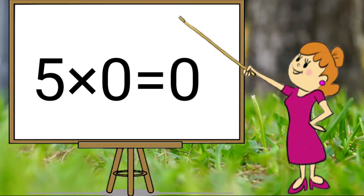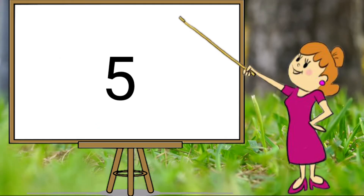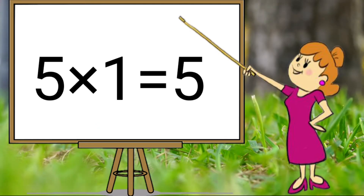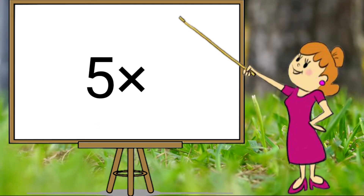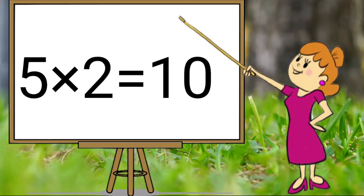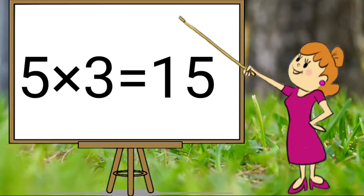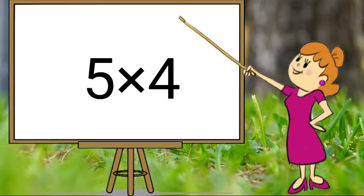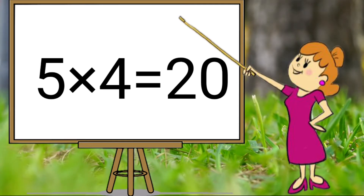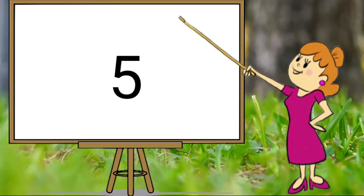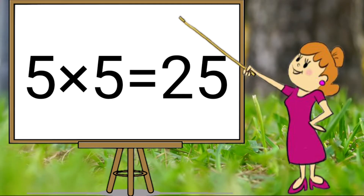5 0s are 0, 5 1s are 5, 5 2s are 10, 5 3s are 15, 5 4s are 20, 5 5s are 25.